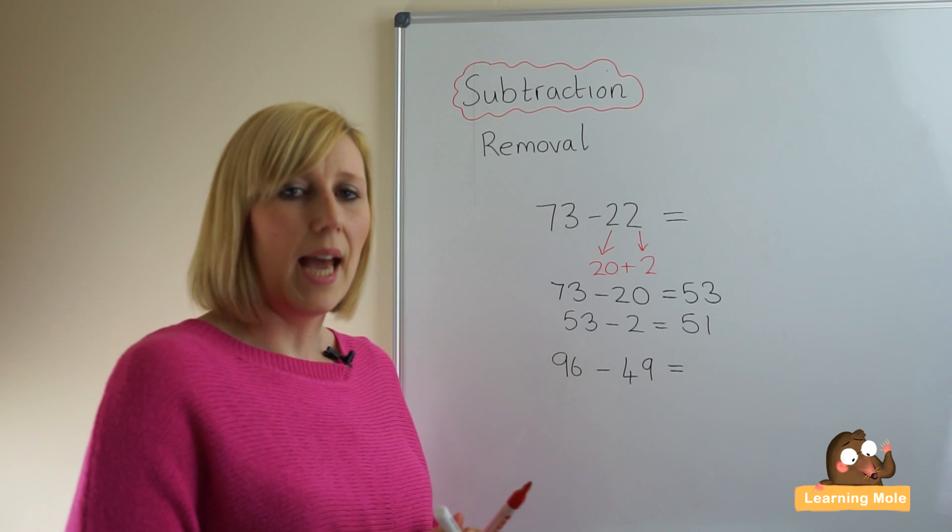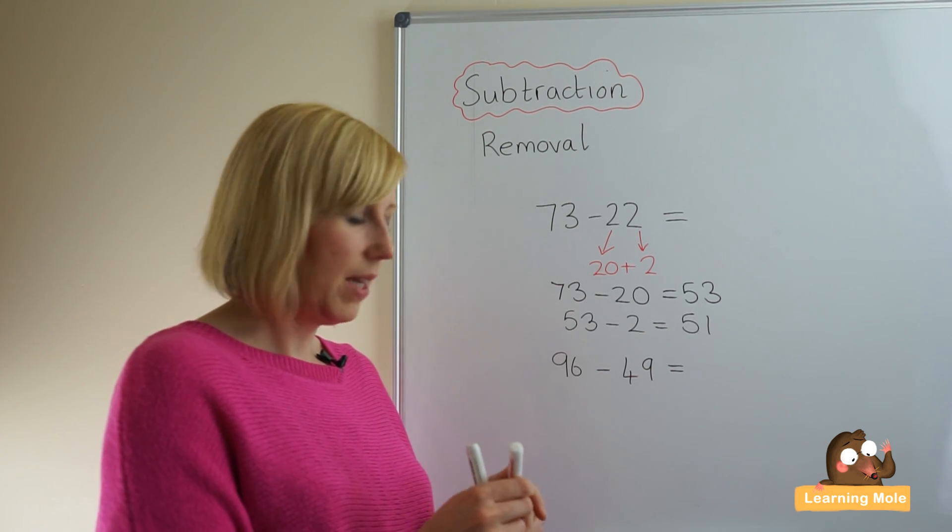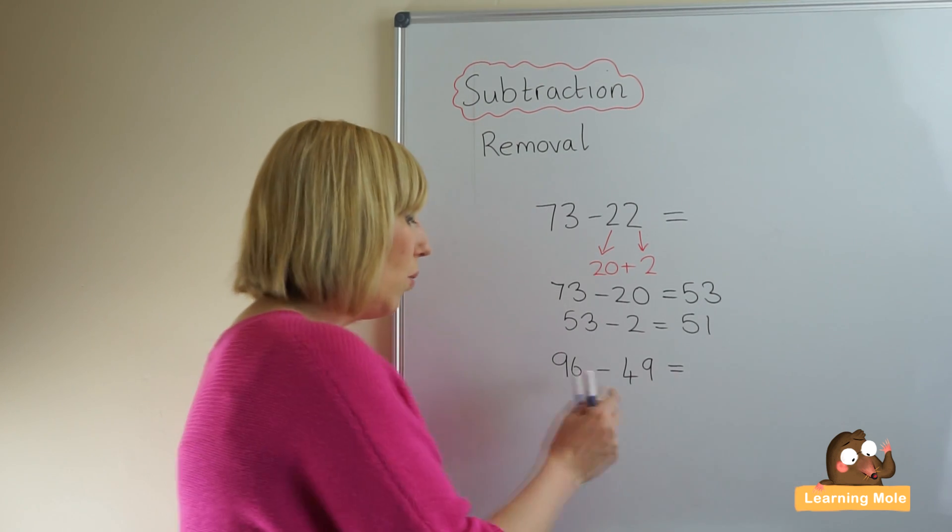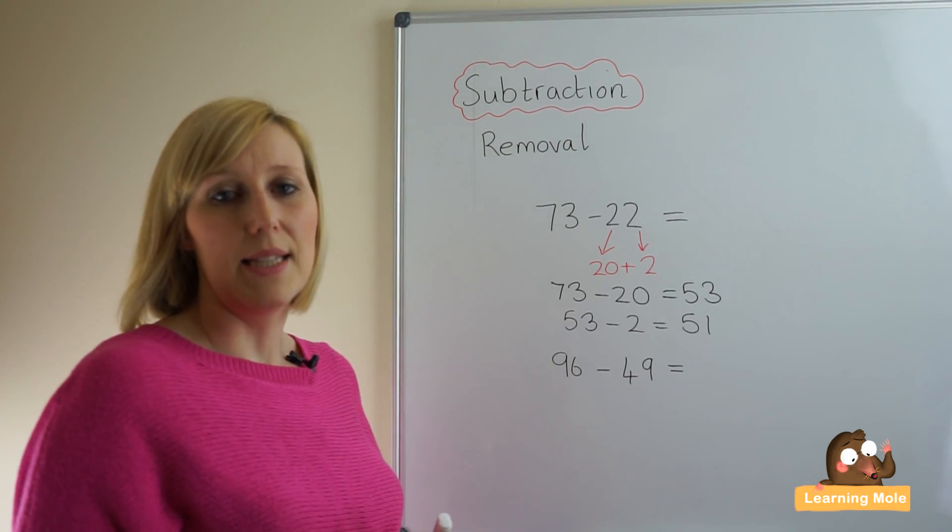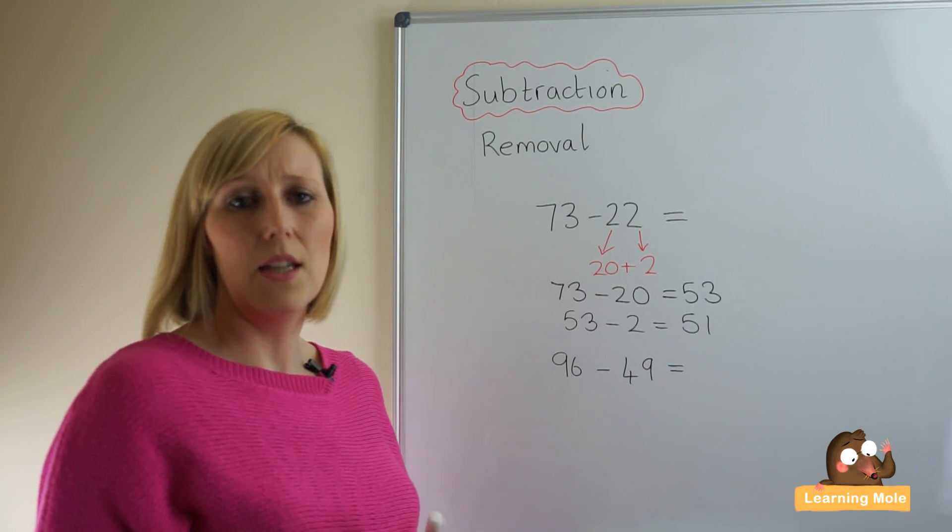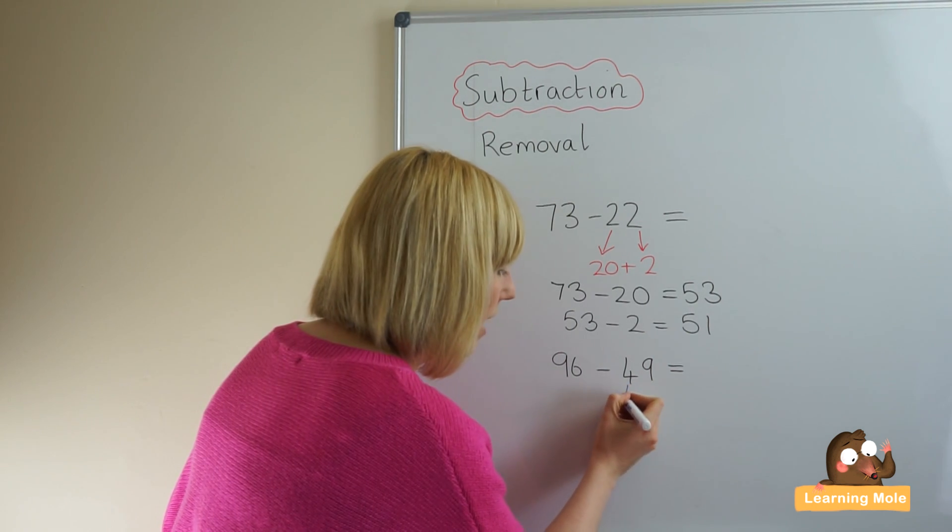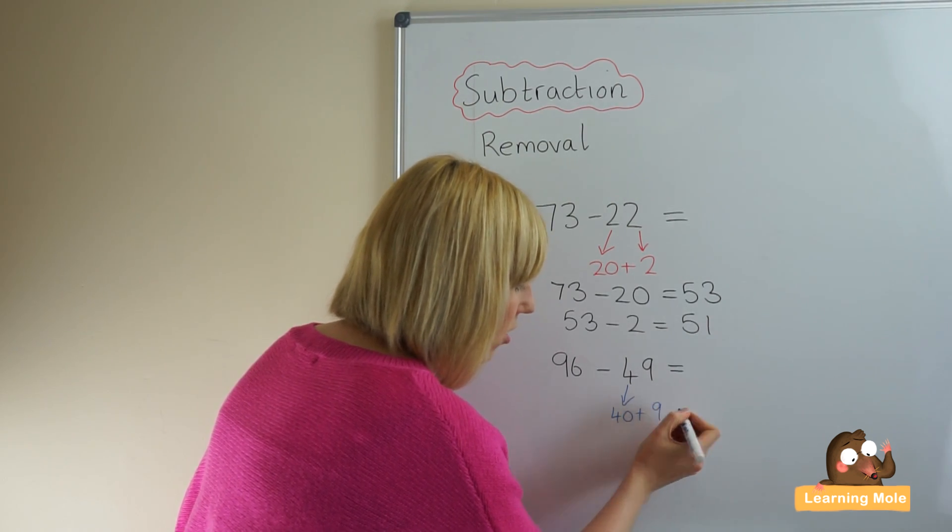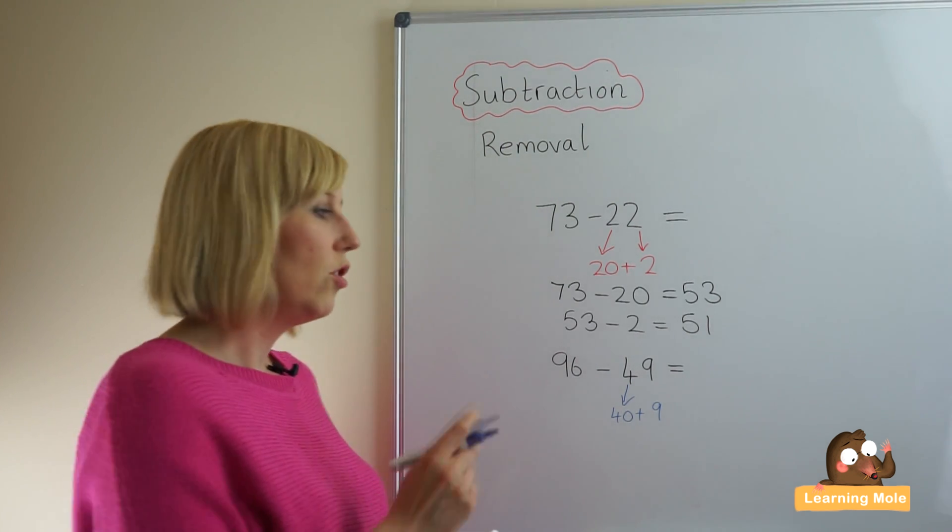So let's do that again, another calculation just so we can work through those steps. This time we've got 96 and we've got 49. We're going to leave the biggest number as is. We're going to partition the smaller number into tens and units: we've got 4 tens and 9 units.